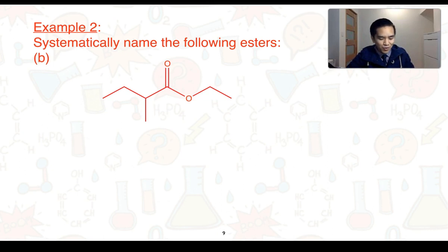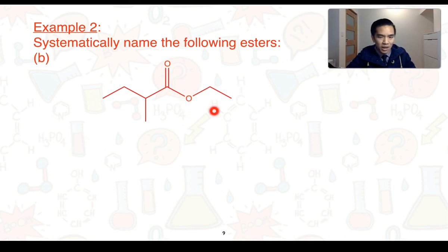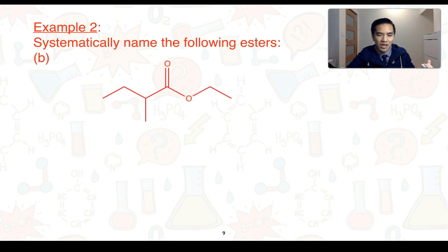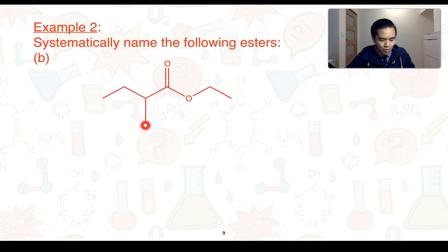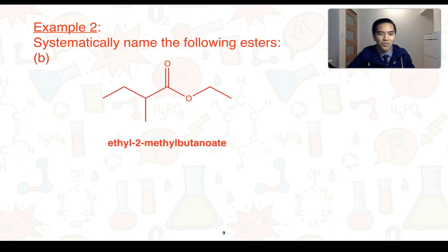For part B, we've got this skeletal formula. Again, the key is to identify where the alcohol and carboxylic acid components come from. The single-bonded oxygen is the alcohol part and the other section is the carboxylic acid part. Starting with the alcohol part, there are two carbons in the longest chain, so this would resemble an ethanol molecule — the name starts with ethyl. Looking at the carboxylic acid section with the side group, this would have been derived from 2-methylbutanoic acid — four carbon atoms. So the final name is ethyl-2-methylbutanoate.